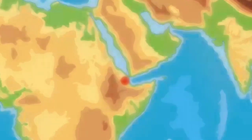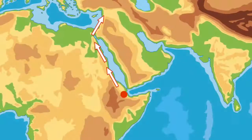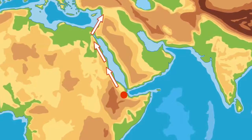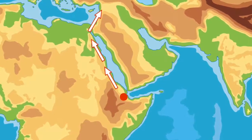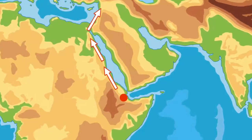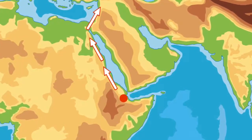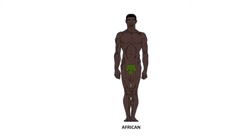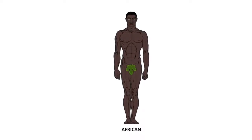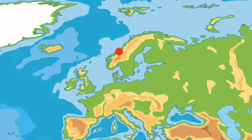Tribal groups of these first humans journeyed outwards from Africa around 130,000 years ago during a warmer interglacial period. This is the out of Africa theory. They migrated to the north of Europe.